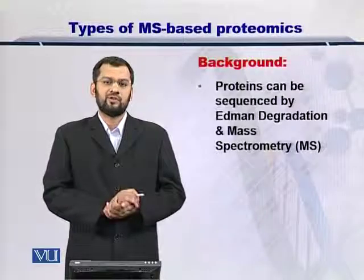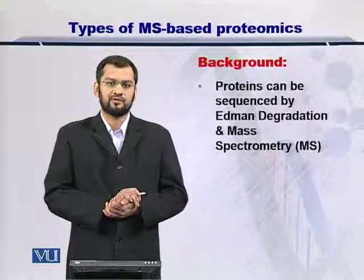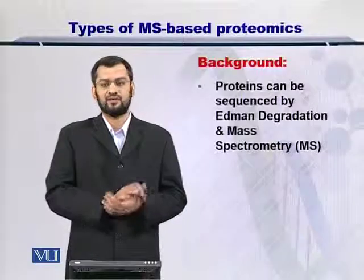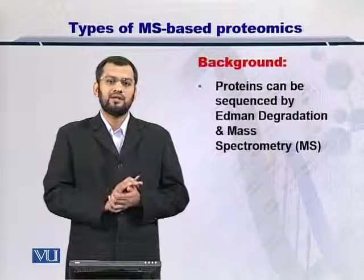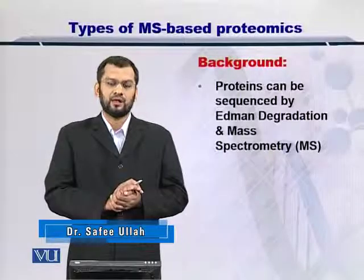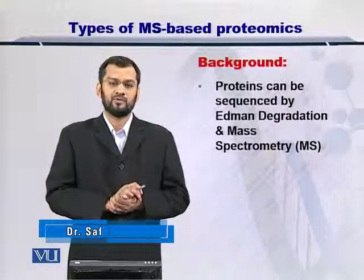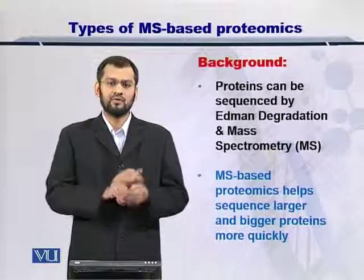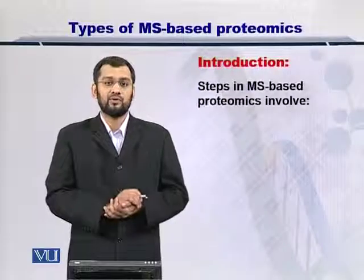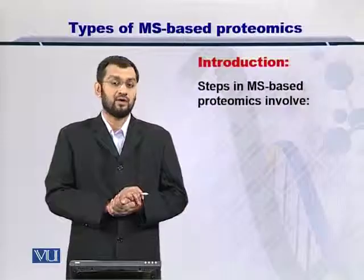Proteins can simply be sequenced by using Edman degradation. You may not know the protein that is in a sample and therefore you can proceed with the Edman degradation and arrive at the sequence. But Edman degradation has a shortcoming: it cannot sequence very large proteins, and therefore you can use mass spectrometry based proteomics, which can solve this problem for very large proteins. Moreover, this process can be done very quickly, whereas Edman degradation takes a very long time.